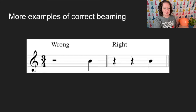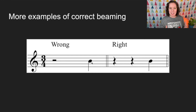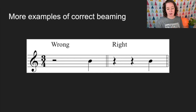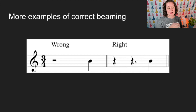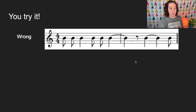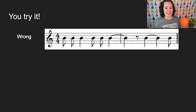More examples of correct beaming: in three-four, a half rest followed by a quarter note is incorrect because combining across beats is only allowed in simple quadruple meter. Since it's simple triple, each pulse must be shown separately. The correct way is to use two quarter rests and then a quarter note. Now here's a wrong example — using a bit of staff paper, can you figure out the right version? I'll give you about 20 seconds.